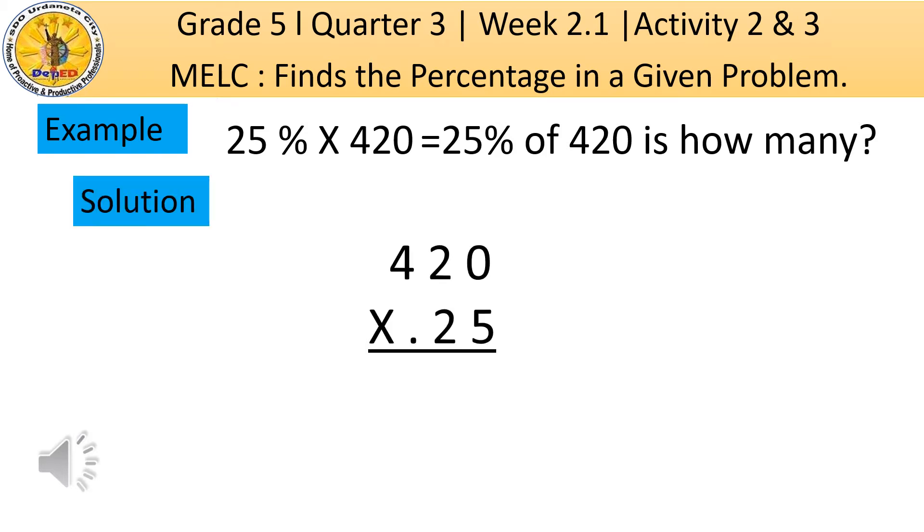Let us start multiplying 420 times 25 hundredths. We use the first multiplier which is 5. 5 times 0 is 0. 5 times 2 is 10. We group 1 to the last upper digit of multiplicand. Then 5 times 4 is 20 plus 1 is equal to 21. Then let's proceed to the second multiplier which is 2. So 2 times 0 is 0. 2 times 2 is equal to 4. And 2 times 4 is equal to 8.